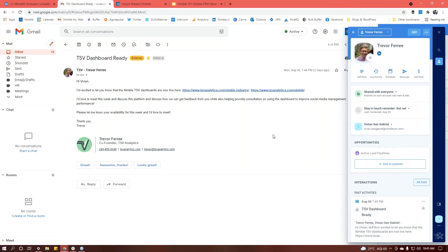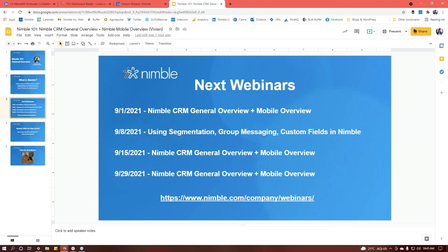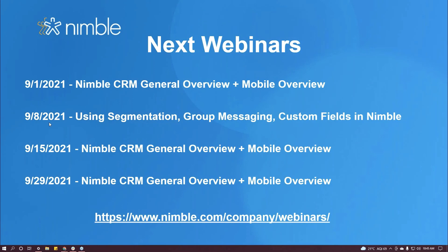We've covered all of the main Nimble features as well as everything about Nimble Prospector, so we can move into our Q&A session. Before we do that, I just wanted to let you all know that we have more webinars coming up. Next week we're going to be going over segmentation, group messaging, and custom fields. Every two weeks, we're going to have more general overviews. You can access all these webinars by going to nimble.com/company/webinars.